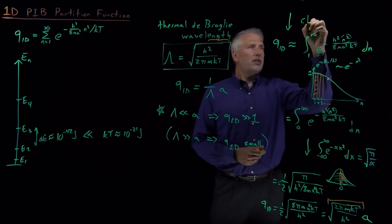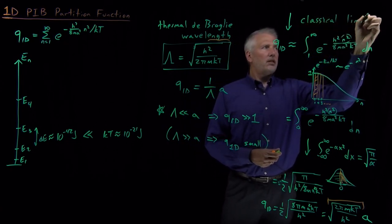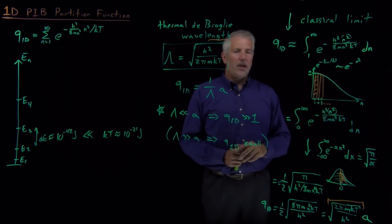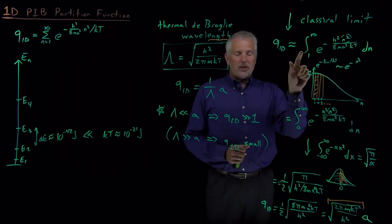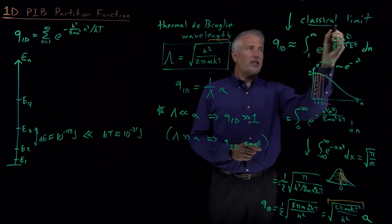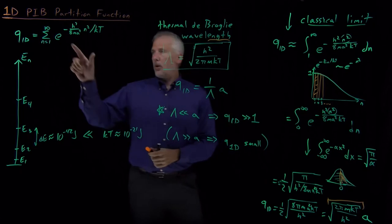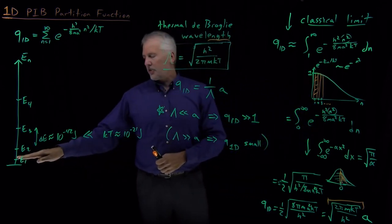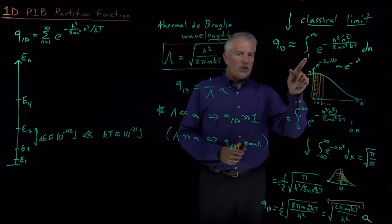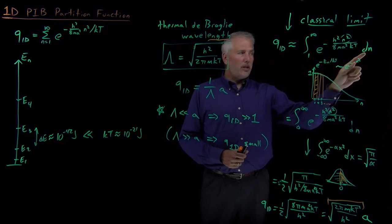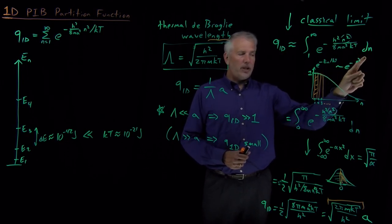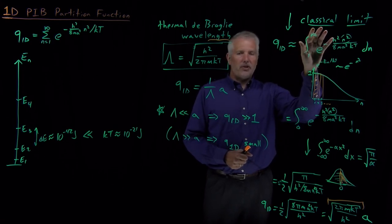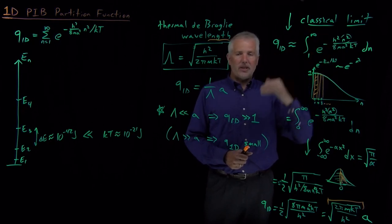Under these conditions, the approximation of converting the sum to an integral is very good, because there are so many slices in the sum. We call this the classical limit. Even though we started with quantum mechanical energies for a 1D particle in a box, by writing the integral we've effectively said: instead of only allowing integer values of n, we allow any real value of n. We're computing the partition function as if the system were classical with no discretization or quantization of energy levels.